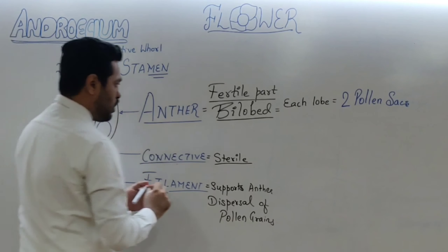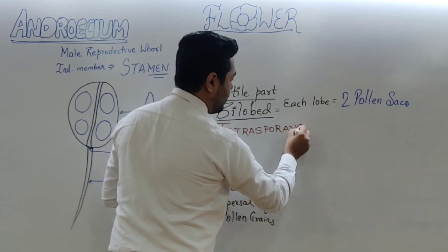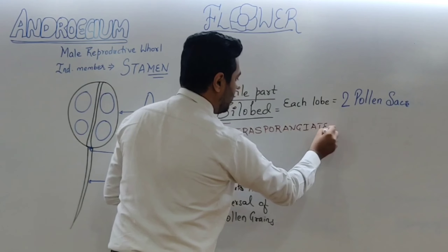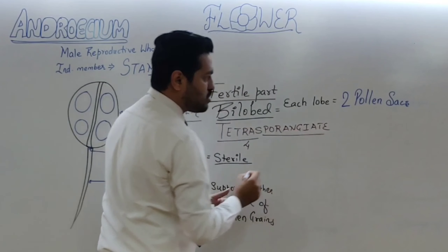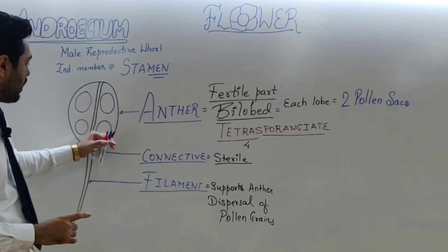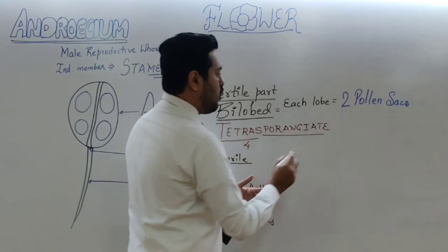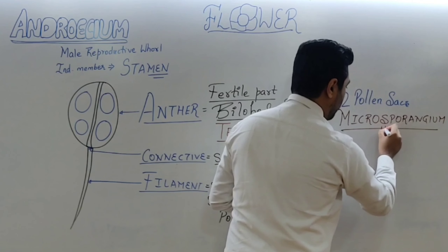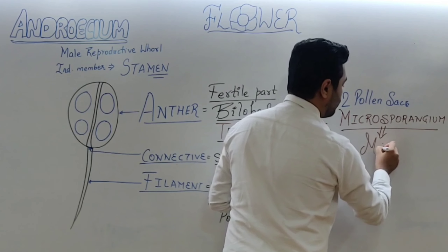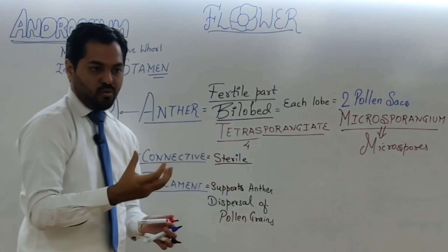Because the anther contains four pollen sacs in total, it is called tetrasporangiate — 'tetra' meaning four. The pollen sacs or pollen chambers are also known as microsporangia (microsporangium), because inside them, the development of microspores takes place from microspore mother cells.